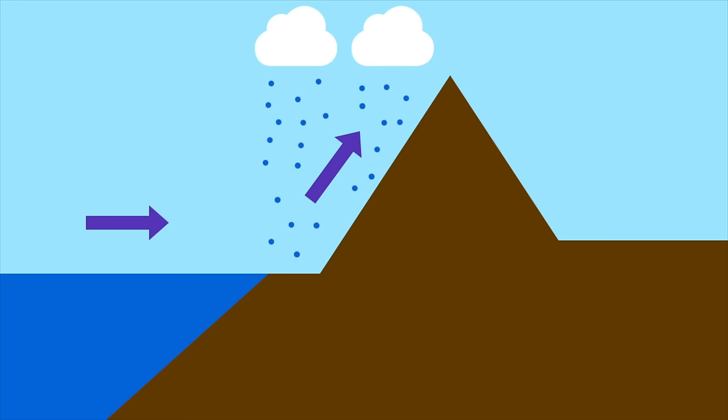Most of the precipitation ends up on the side facing the ocean, called the windward side, while the other, or leeward side, gets little. This causes one side to be moist and full of vegetation, while the other is dry.